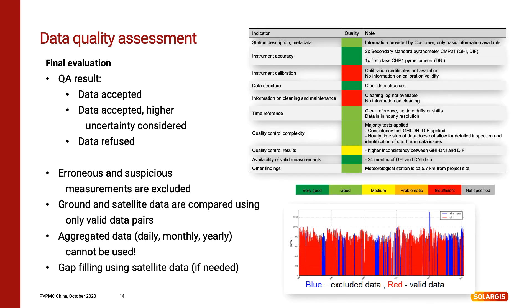The last step of quality assessment is final evaluation of all previously performed tests. All input information is summarized and evaluated in a summary table and each item has its own color flag for visual differentiation. Flagged measurements are sorted into three groups according to their acceptance: data may be accepted, accepted but with higher uncertainty considered, or wrong data is excluded. Accepted data may then be used for comparison with satellite data, for site adaptation, gap filling or for aggregations. Sometimes situations occur where so much measured data was excluded that site adaptation is not possible.